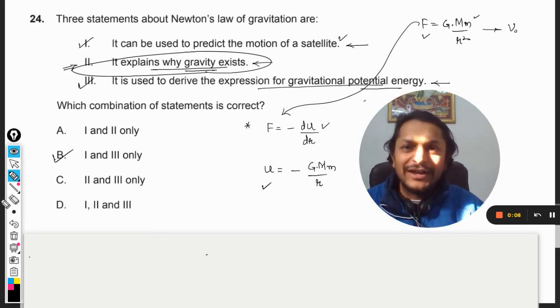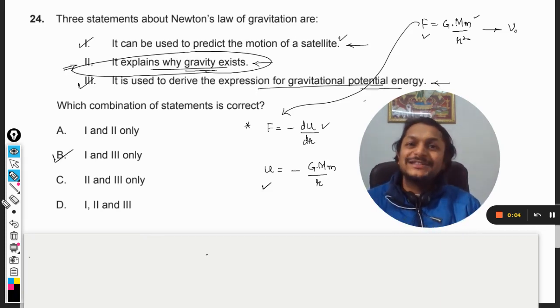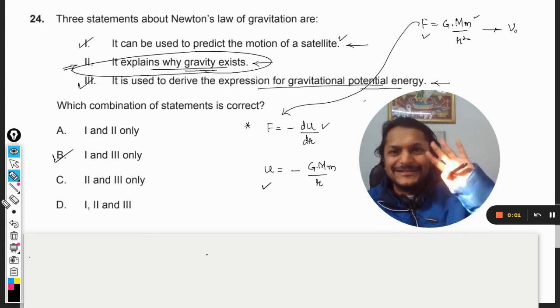That graviton is being exchanged between two bodies. So it means overall we do not know why gravity exists even today. People are still confused. So our answer is one and three. So my dear students this is Professor Varun. Please subscribe to the YouTube channel. All the best, bye.